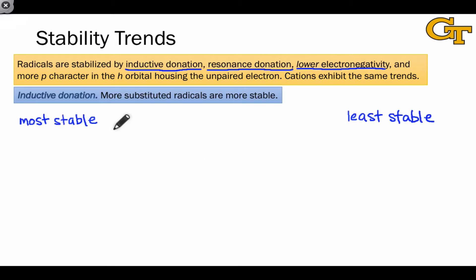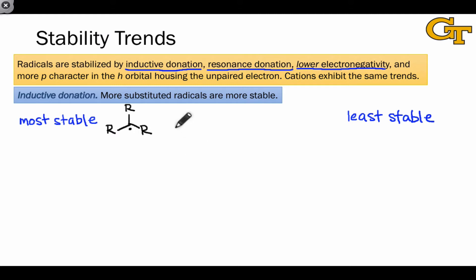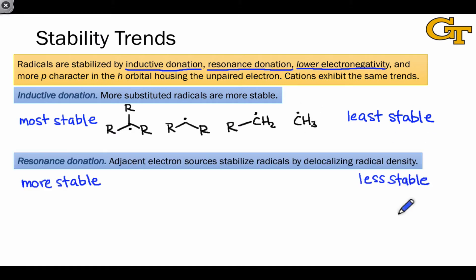Because alkyl groups donate electron density to the electron deficient radical center, the most substituted radicals are the most stable. Tertiary radicals bearing three alkyl groups are the most stable, followed by secondary radicals, primary radicals, and the methyl radical, which is the least stable in this series.